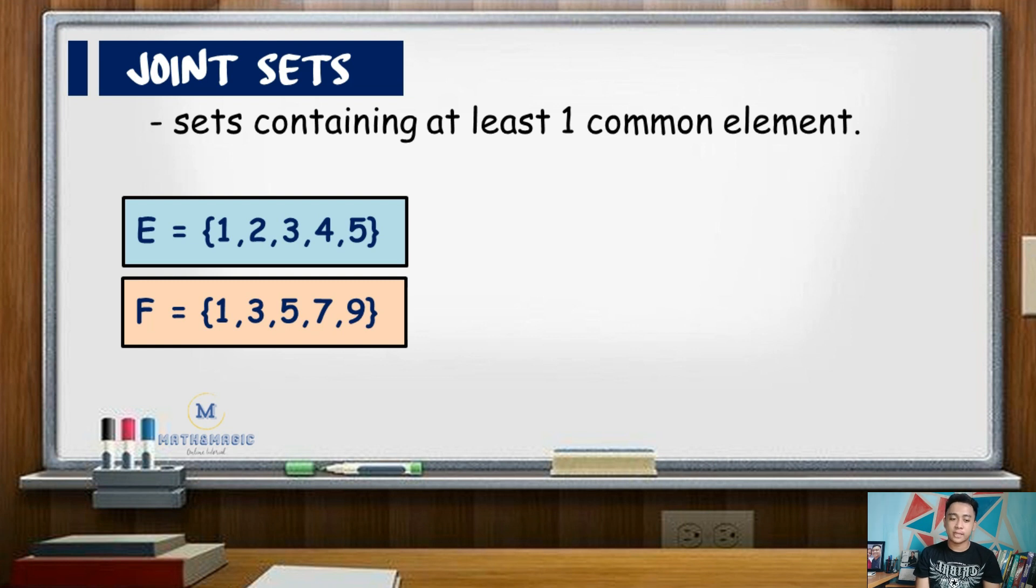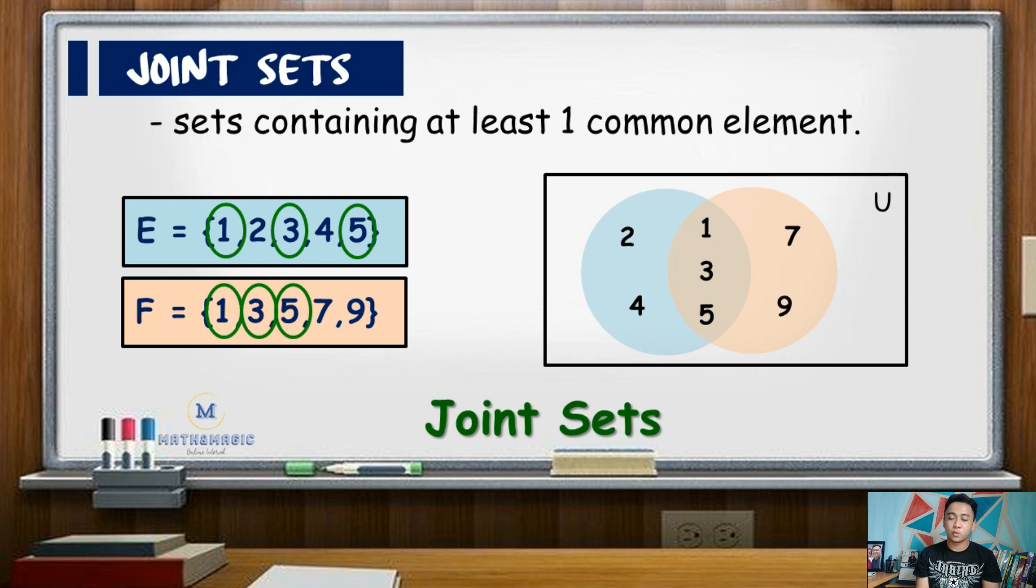Notice that in these two sets, 3 and 5 are common on both. So illustrating this using a Venn diagram, we have two sets which are joint.